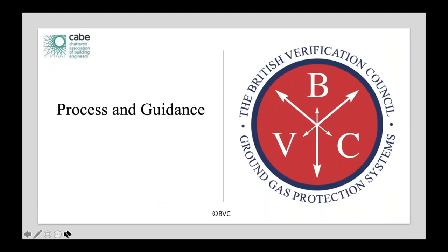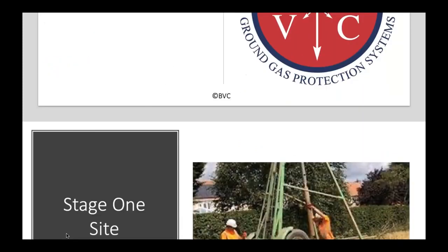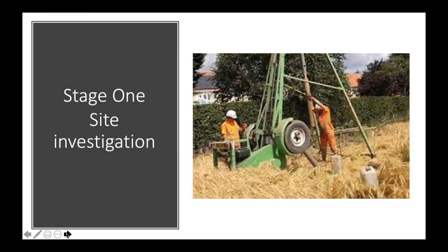The process and processing guidance — this is where I get involved as a verifier. Stage one is the site investigation. The local authority planning conditions will all ask for a site investigation and will put planning restrictions on that. They have a plan to follow, issued from local government under Part 2A, which instructs them that they've got to have a site investigation if they want to build houses, so they can assess and put planning conditions in place based on that investigation.